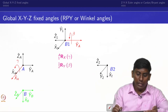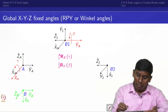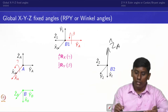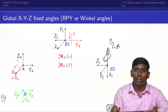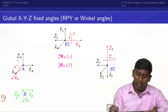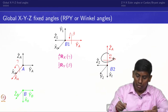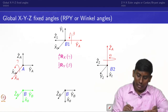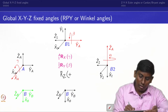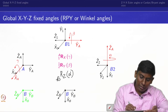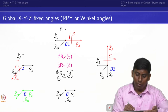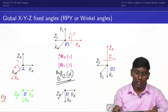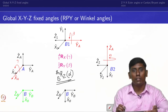Finally, we take the z_a cap and rotate by angle alpha, obtaining the final frame B. This gives the rotation about z by alpha. Since we are rotating everything with respect to the fixed axis, we pre-multiply. The final rotation matrix R of B with respect to A is: first R_x(gamma) for B1 with respect to A, then pre-multiplied by R_y(beta), then pre-multiplied by R_z(alpha).